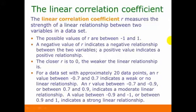To get an idea of how R helps us determine the strength of the relationship, we can look at R values for a data set with approximately 20 data points. For a data set like this, an R value between negative 0.7 and positive 0.7 indicates a weak relationship or no linear relationship. An R value between negative 0.7 and negative 0.9, or between 0.7 and 0.9, indicates a moderate linear relationship.